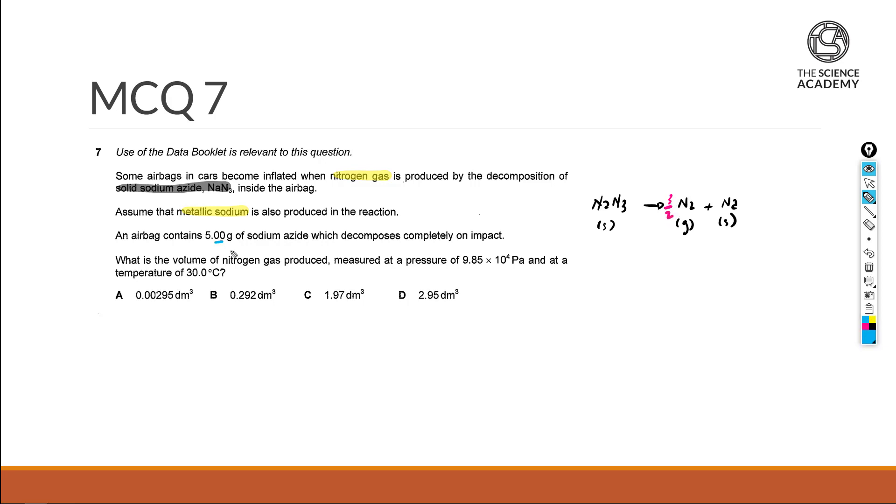The starting info states that we have 5 grams of your sodium azide at the start and we're tasked to find out the volume of nitrogen gas produced with the pressure measured at 9.85 times 10 to power 4 pascal as well as temperature of 30 degrees Celsius.